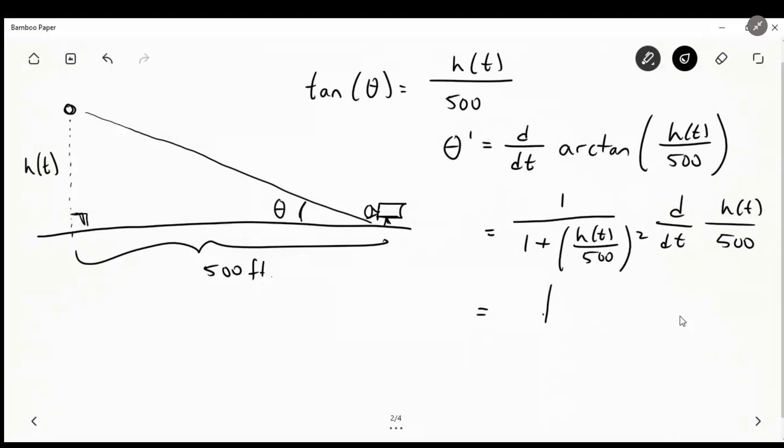So we're going to have 1 over 1 plus in this case x squared is our whole term here. So we'll just say H of T over 500 squared. And then d dt of H of T over 500. And that is our chain rule. We're going to keep this term the same, just to save us a little bit of time.